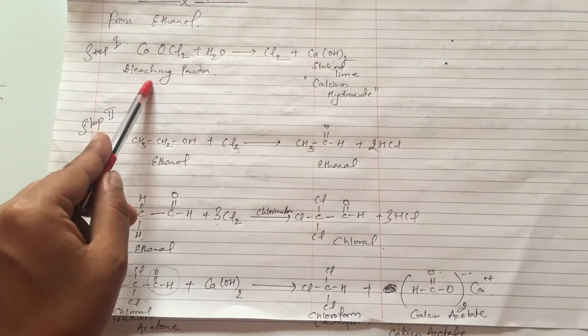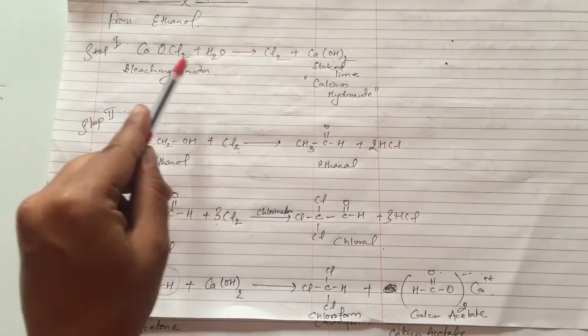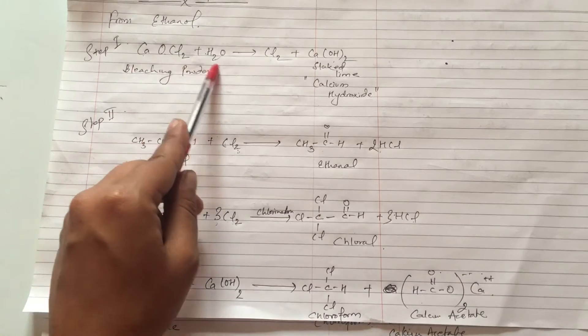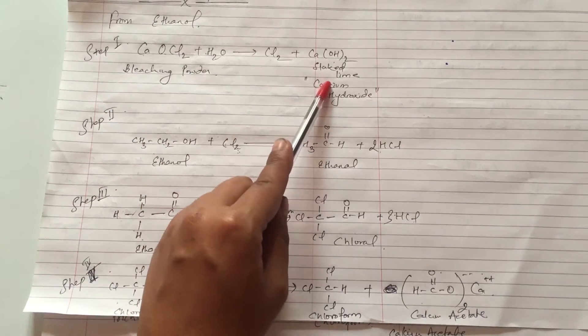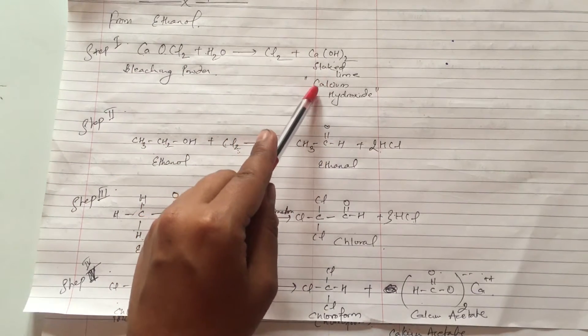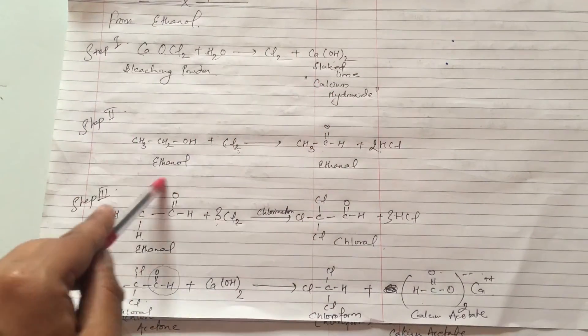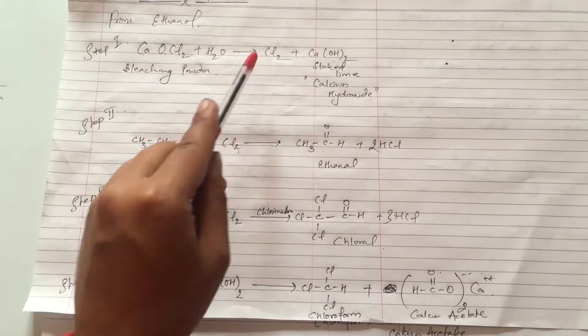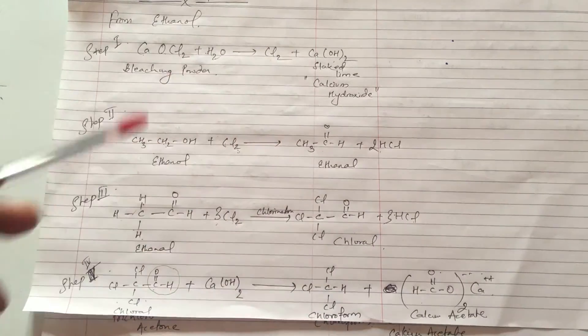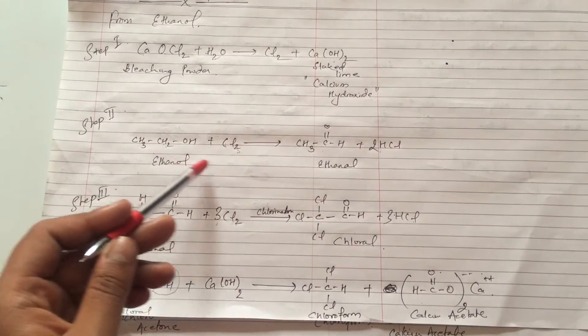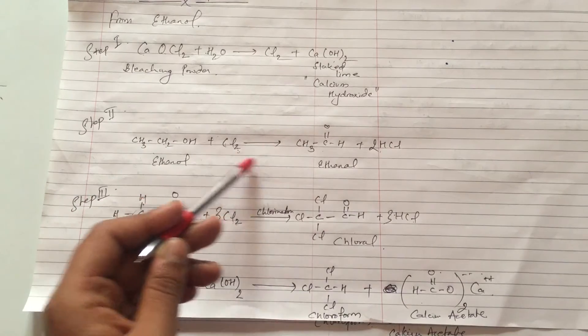So the bleaching powder is made of bleaching powder. After the formation of calcium hydroxide, that is slaked lime, what we do is ethanol. Ethanol is treated with chlorine.